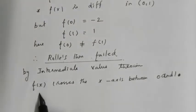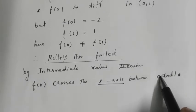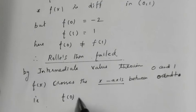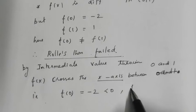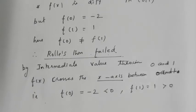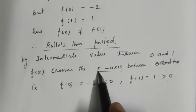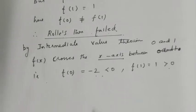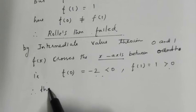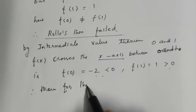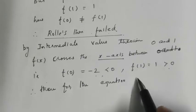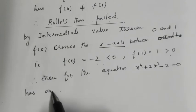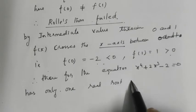By the Intermediate Value Theorem, f(x) crosses the x-axis between 0 and 1 — that is, f(x) = 0 for some point in (0, 1). We note that f(0) = -2, which is less than 0 (negative), and f(1) = 1, which is greater than 0 (positive). Since the curve goes from negative to positive, it must cross the x-axis. Therefore, the equation x⁴ + 2x³ - 2 = 0 has at least one real root in the interval (0, 1).